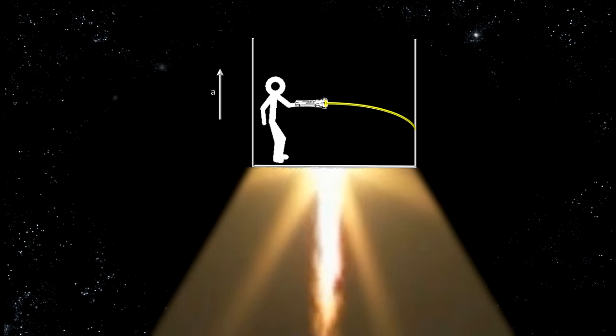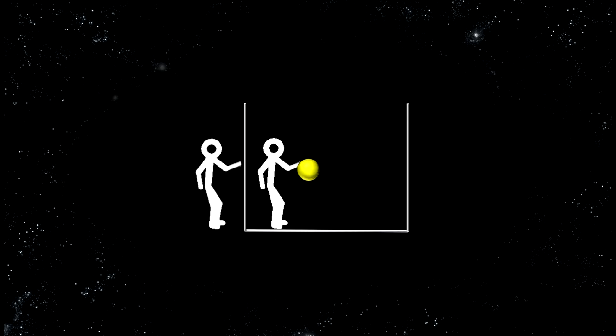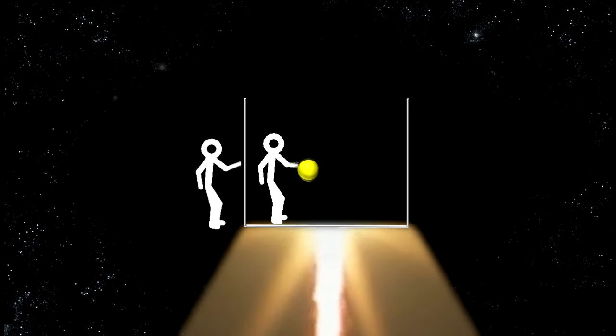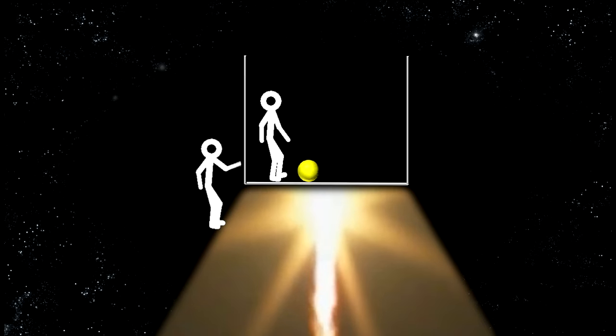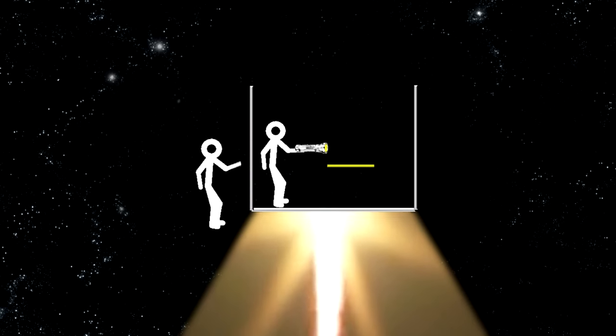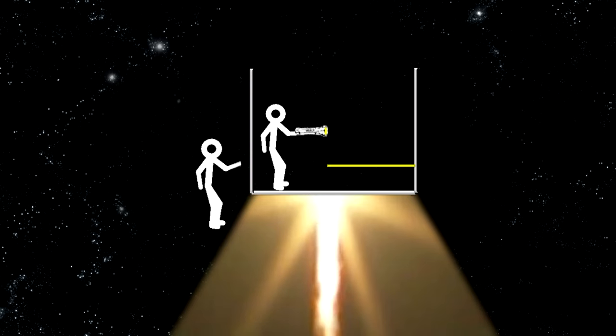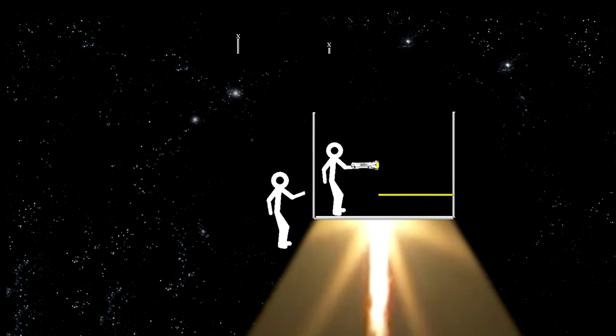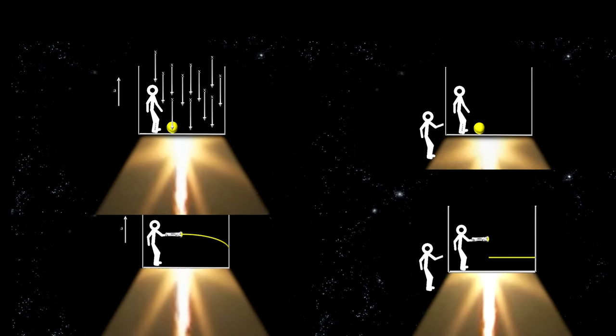Now let's take a look at what a person outside the elevator would see when we drop a ball and shine a light. The person outside the elevator is not accelerating. When the person in the elevator lets go of the ball, the person outside sees that it still hovers in place just as before. He sees that the elevator moved up to hit the ball. There is no force acting on the ball, no force field inside the elevator. And when the person in the elevator turns on the flashlight, the person outside sees the light travel in a straight line as before. He sees that it's the elevator's wall moving up that causes the light to hit it at a lower point. The light does not bend. Who is right?